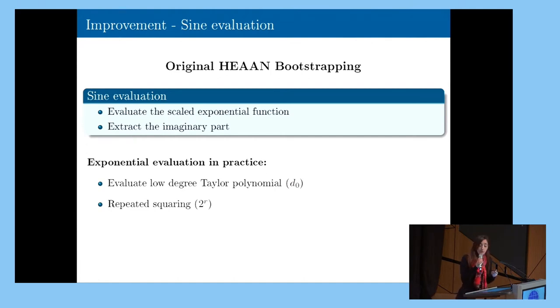So the total degree of the polynomial they evaluate is the product between d_0 and 2 to the power of r, which is, in their case, about 1,000.